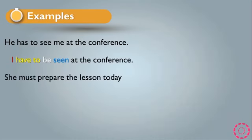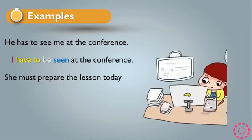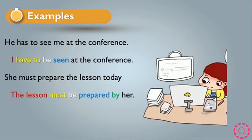Another sentence: 'She must prepare the lesson today.' In passive, it becomes 'The lesson must be prepared by her.' Why 'by her'? Because sometimes the sentence or question asks to use 'by'. If that is the case, the sentence will be like that. We cannot write 'she' at the end; we must use the object pronoun, which is 'her'. So it becomes 'The lesson must be prepared by her.'